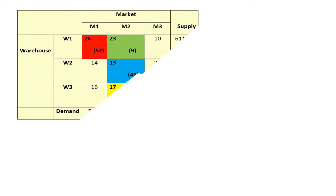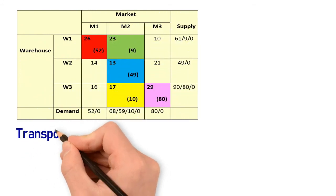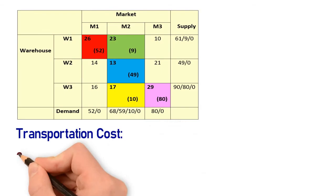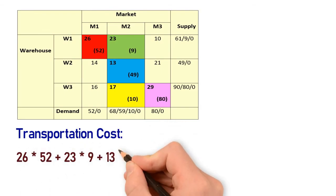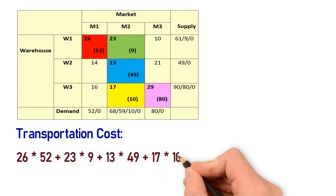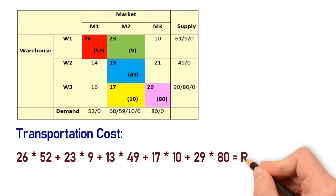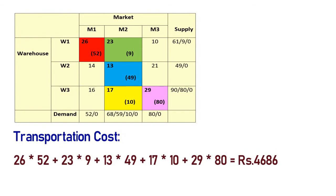Our next step is to calculate the transportation cost. We select only the allocated cells and compute: 26×52 + 23×9 + 13×49 + 17×10 + 29×80 = Rs. 4,686. This is the transportation cost for the given transportation problem.